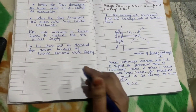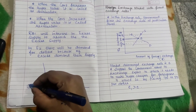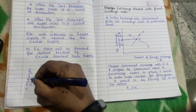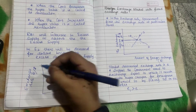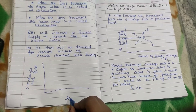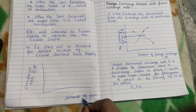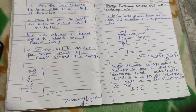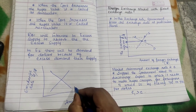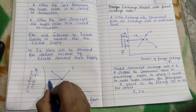Now going through the diagram: the vertical axis represents the exchange rate — rupees per dollar — and the horizontal axis represents the amount of foreign exchange, for example, dollars. The supply and demand curves intersect at equilibrium point E.